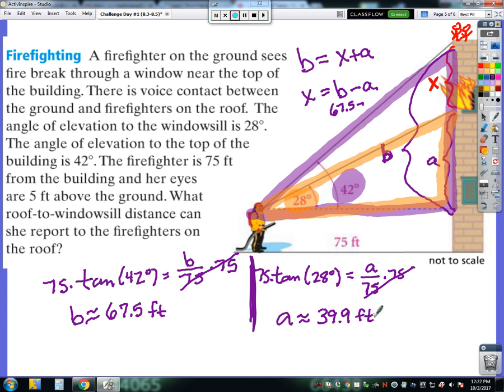If you wanted to round these to the nearest whole number, it's fine. It doesn't state anywhere in the problem how to round the answer. So now I can take 67.5 minus 39.9. And that would leave me with x, this distance here, which comes out to be 27.6 feet. And again, I rounded to the nearest tenth just because I wanted to. And that is the second to last challenge problem.